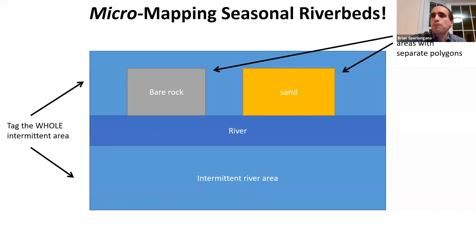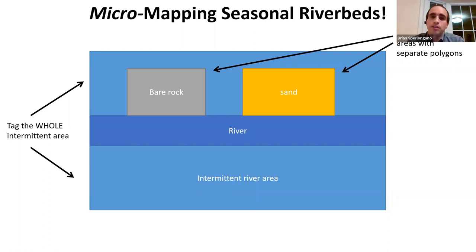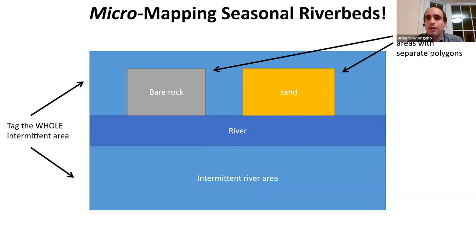What if you wanted to micro-map the different areas of exposed riverbed? When the river recedes, sometimes it's sand, sometimes bare rock, scree, or gravel. In that case you can tag additional polygons to represent each of these micro-mapped areas, with the intermittent water polygon covering the whole area.